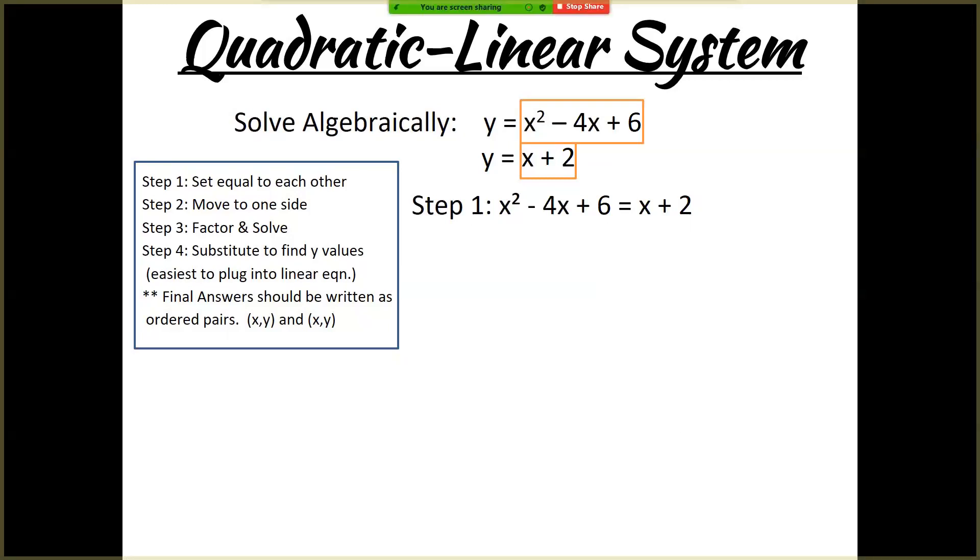So looking at the next one, x squared minus 4x plus 6 and x plus 2, our first step is always going to be to set those two equations equal to each other, because they both equal y. Then we're going to move everything to one side. So subtract x, subtract 2, subtract x, subtract 2. So that gives me x squared minus 5x plus 4.